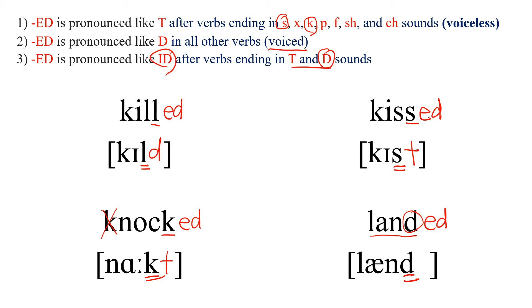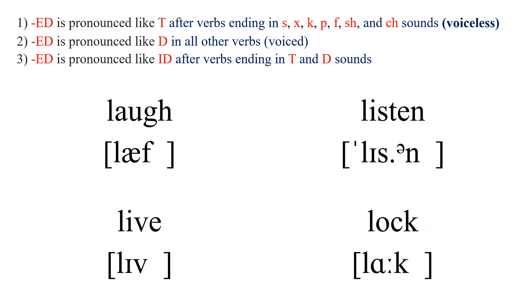Next one: LAUGH. This ends in a consonant, so we add ED. This is an F ending, one of the voiceless sounds, so we add T and read: LAUGHED.